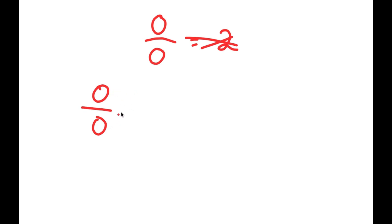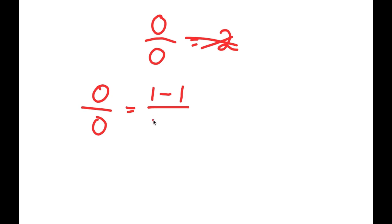Well, 0 over 0 — this is the same thing as 1 minus 1, meaning 0 over 0. I can write this as 1 minus 1 over 1 minus 1. And this is right because 1 minus 1 is 0, so this is the same thing as 0 over 0.